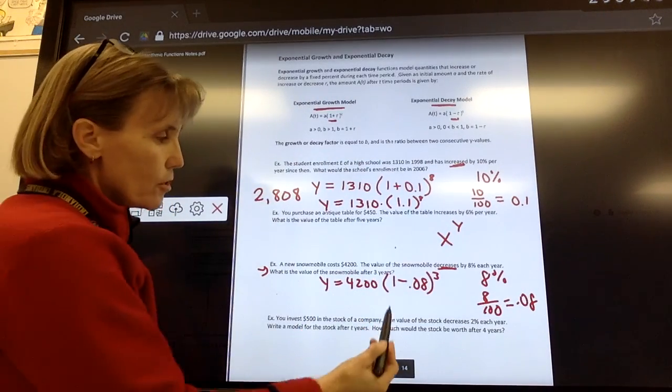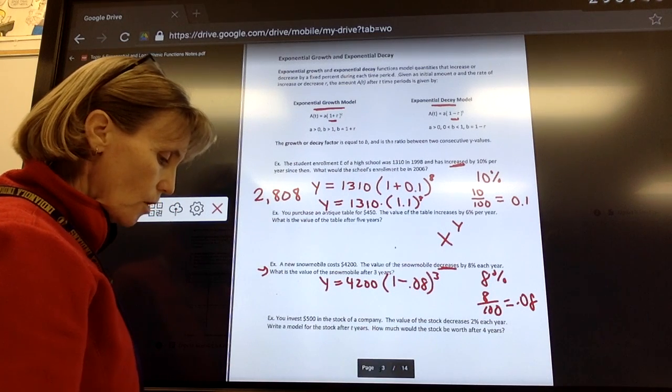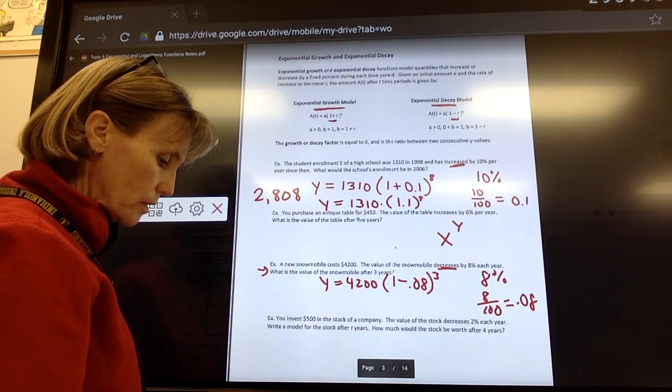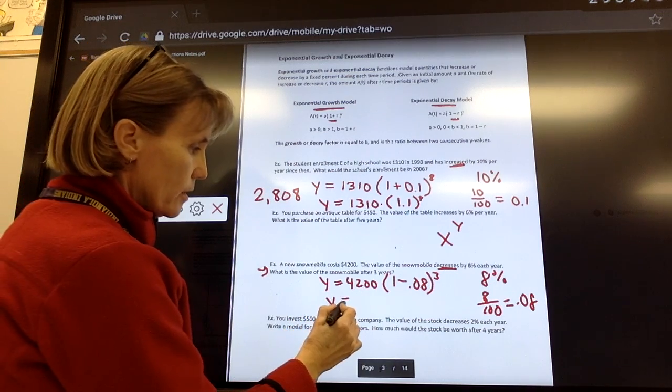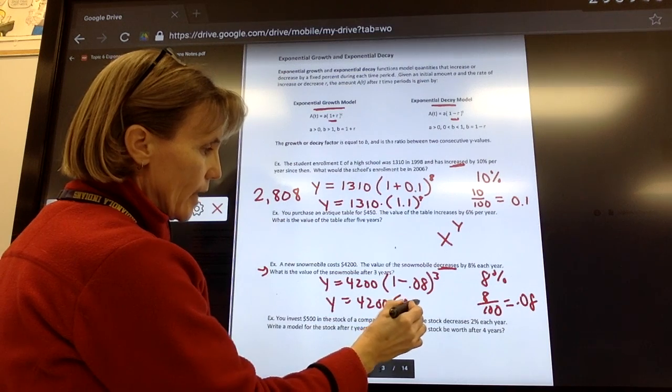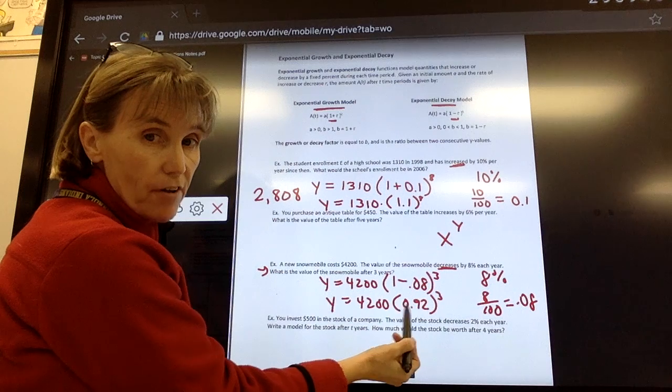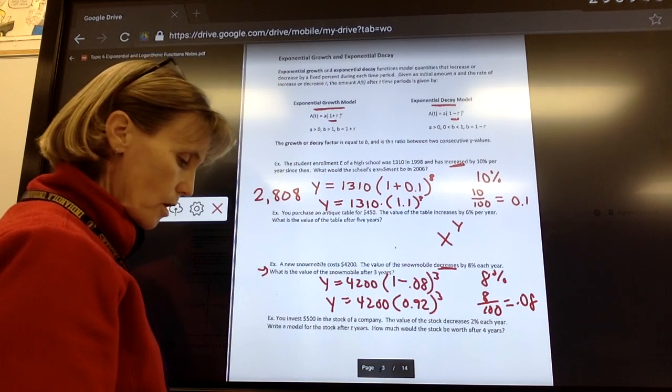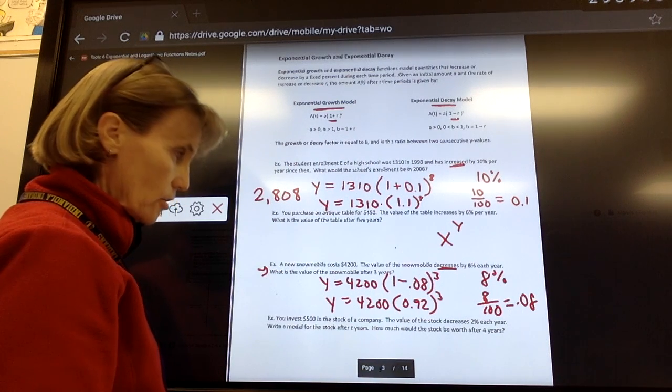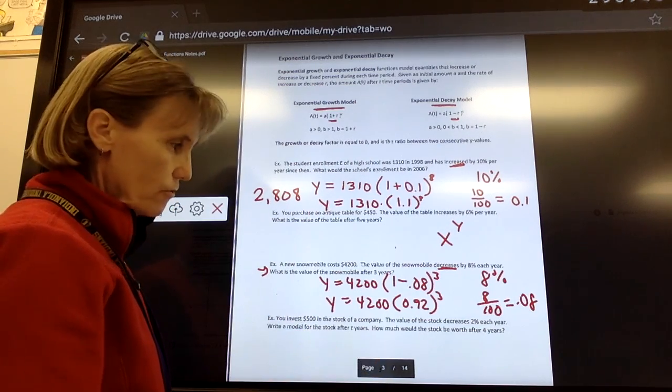Again, follow order of operations. So we do what's inside the parentheses first. 1 minus 0.08 is, I would say, Y equals 4,200. This is 0.92 raised to the power of 3. This would be considered the decay factor, 0.92. I want to raise that to the third power. I hit equals, and again, I get a decimal. Don't round that off.